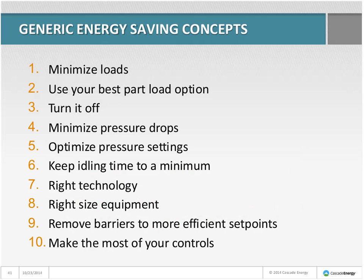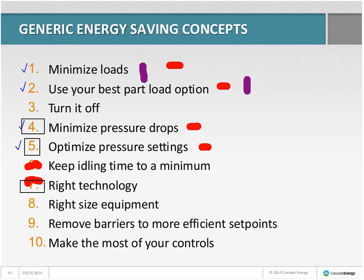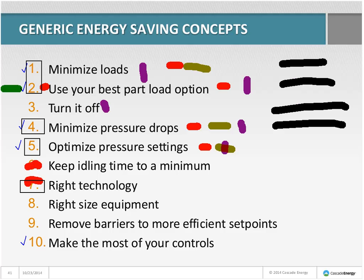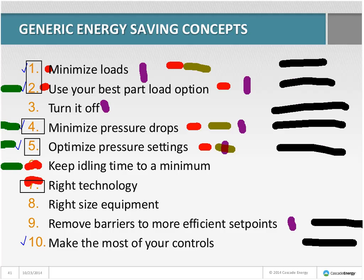Looking at what these guys did to clean up their system: minimize loads on the bag house cleaning; use your best part-load option — the controls upgrade allowed simultaneous trimming; minimize pressure drops and optimize pressure settings by adding the parallel pipe; keep idling time to a minimum — the control system does that automatically.